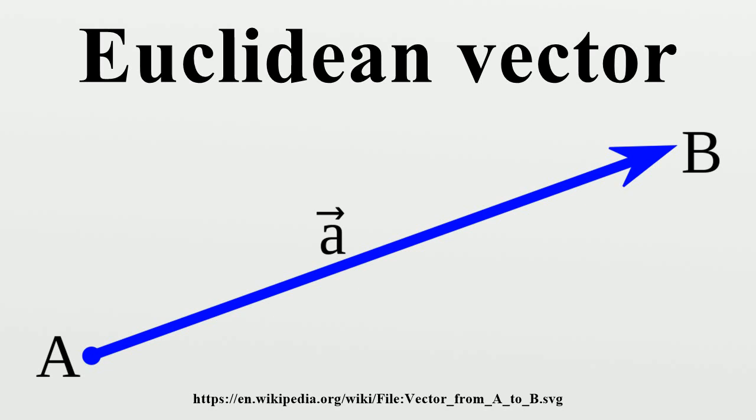Josiah Willard Gibbs, who was exposed to quaternions through James Clerk Maxwell's treatise on electricity and magnetism, separated off the vector part for independent treatment. The first half of Gibbs's Elements of Vector Analysis, published in 1881, presents what is essentially the modern system of vector analysis. In 1901 Edwin Bidwell Wilson published Vector Analysis, adapted from Gibbs lectures, which banished any mention of quaternions in the development of vector calculus.